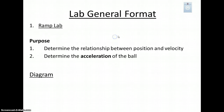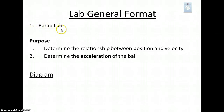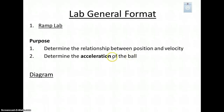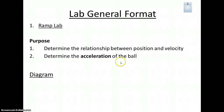Your first lab should start on the first page, and you should number it 1, write 'RAMP Lab,' and underline it. Leave a little space, then write the word 'Purpose' and then number 1 and 2: to determine the relationship between position and velocity, and to determine the acceleration of the ball. The point of this is to keep you organized and focused on what I want you to get out of the lab.